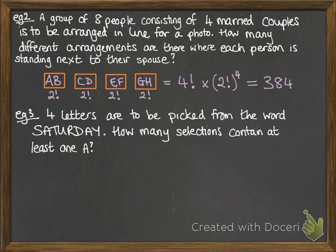Example number three. Four of the letters are to be picked from the word SATURDAY. How many selections contain at least one A? We need to consider the options of whether it has just one A or both A's in it, and we have to do that separately.